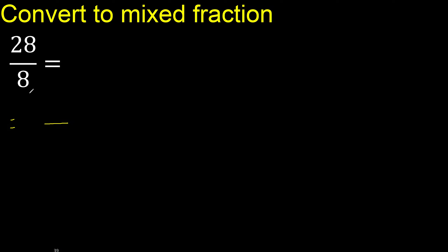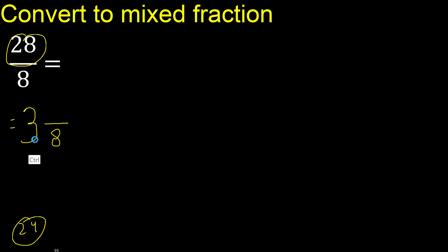First, the same number here. 8 multiplied by which number is nearest to 28 but not greater? 8 multiplied by 4 is greater. 8 multiplied by 3 is 24, which is not greater. 28 minus 24 is 4.